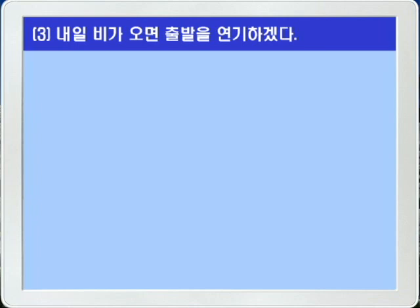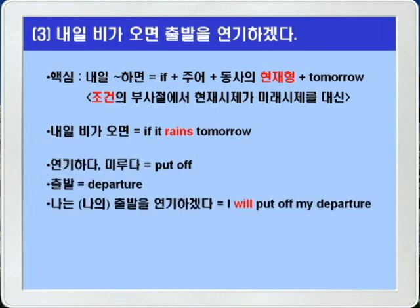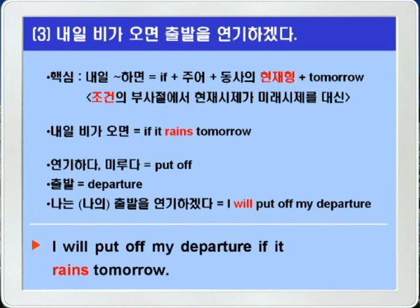3번, 내일 비가 오면 출발을 연기하겠다. 조건의 부사절에서는 현재 시제가 미래의 시제를 대신하니까 if 다음에 주어 그 다음에 동사 현재형을 씁니다. 연기하다 미루다는 put off, 출발은 departure입니다. I will put off my departure if it rains tomorrow.